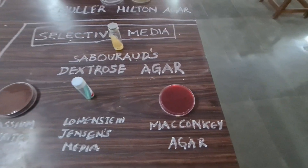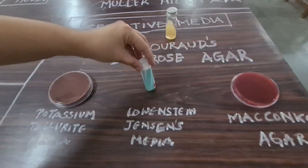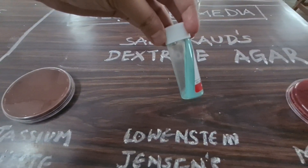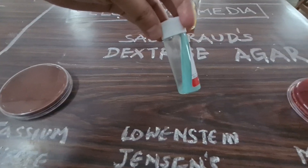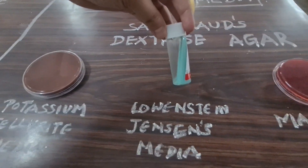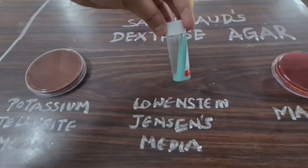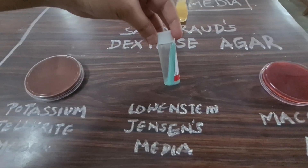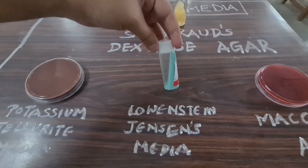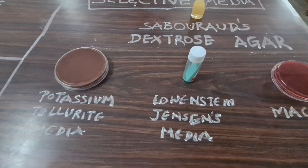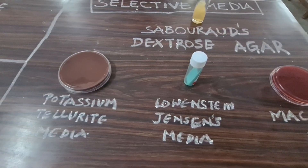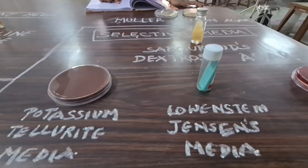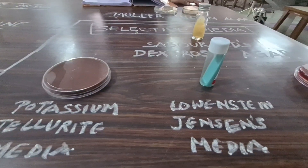Second is Lowenstein-Jensen medium. It is a selective medium for Mycobacterium tuberculosis. The inhibitory substance malachite green inhibits other organisms so that Mycobacterium can easily grow. It also contains egg to enrich the medium and glycerol which provides good growth of the human variety.